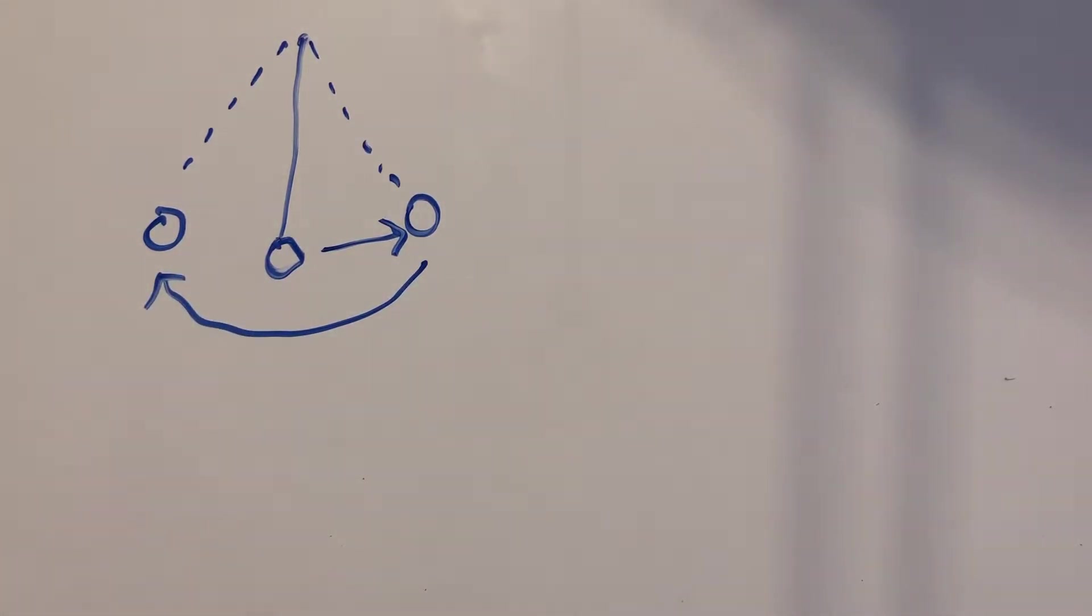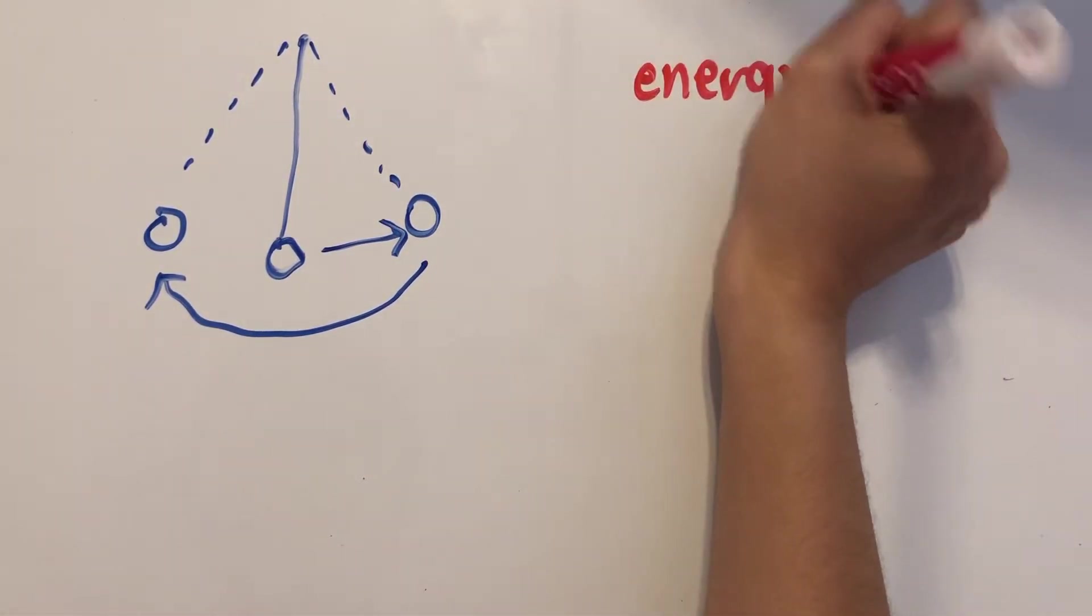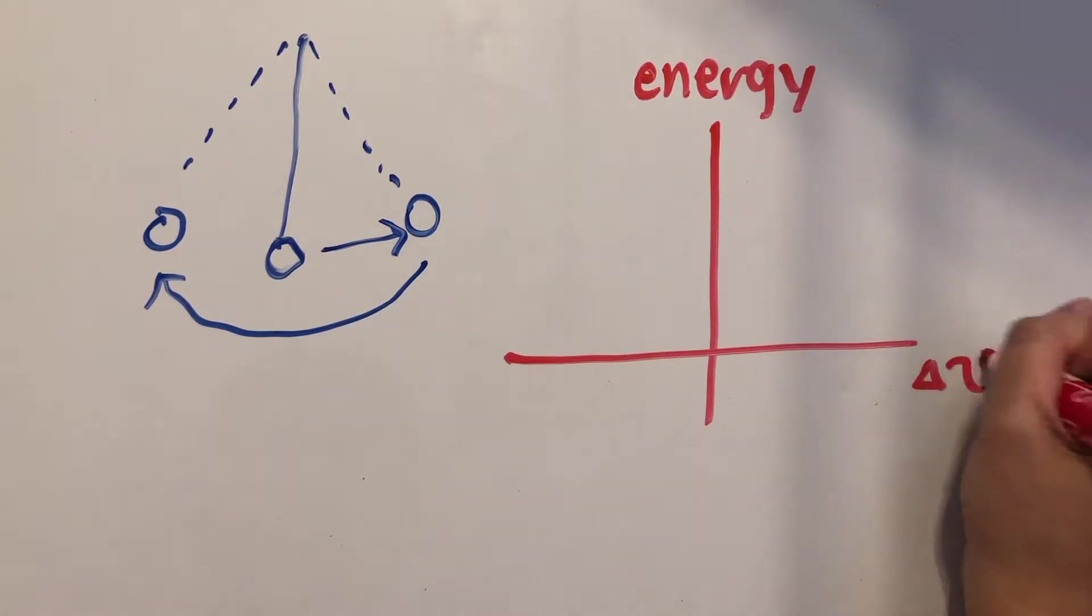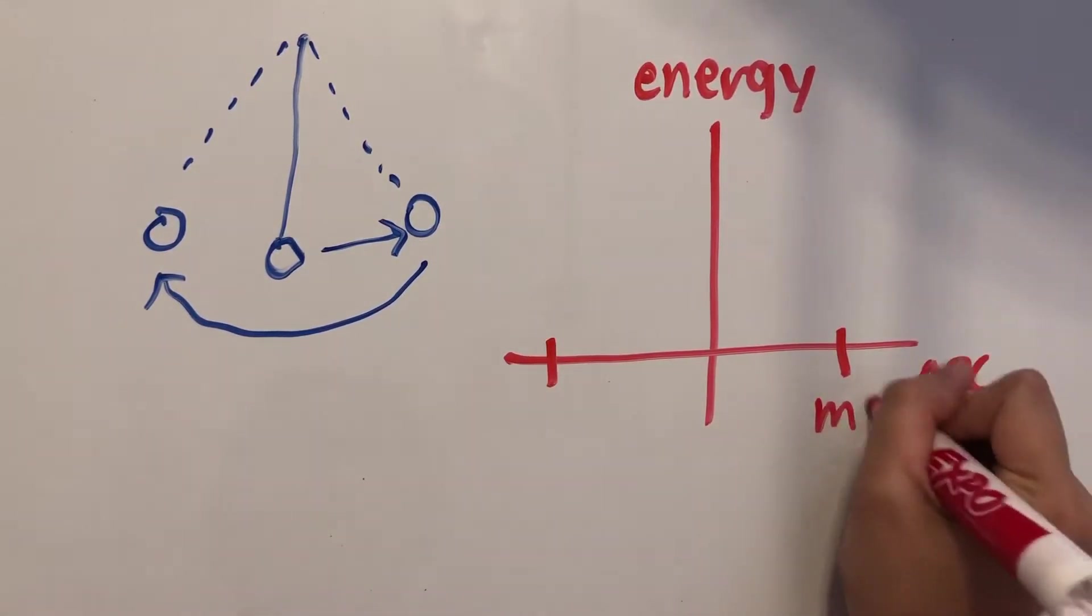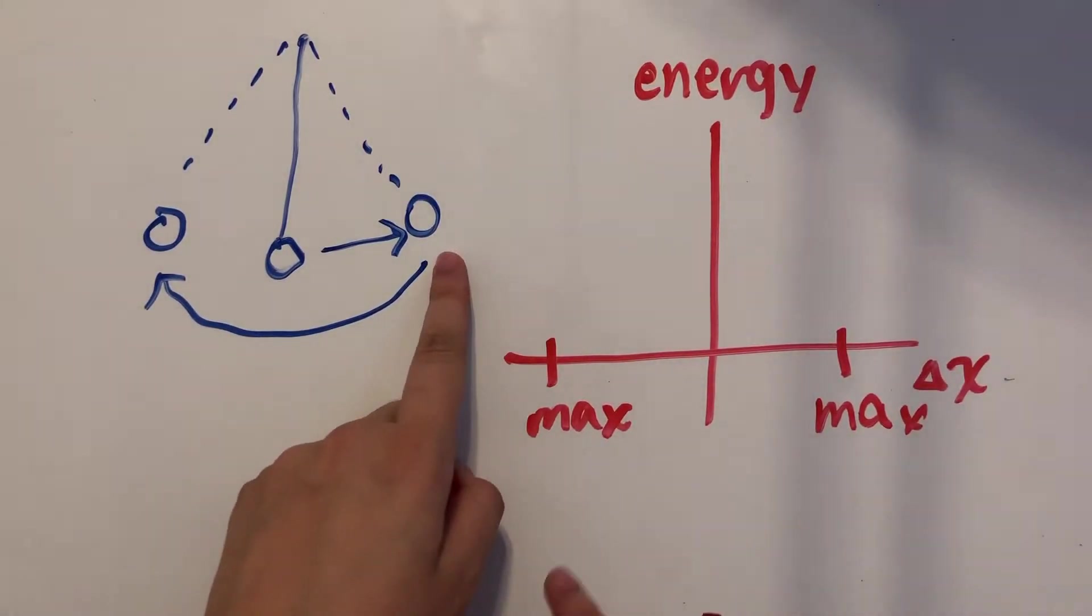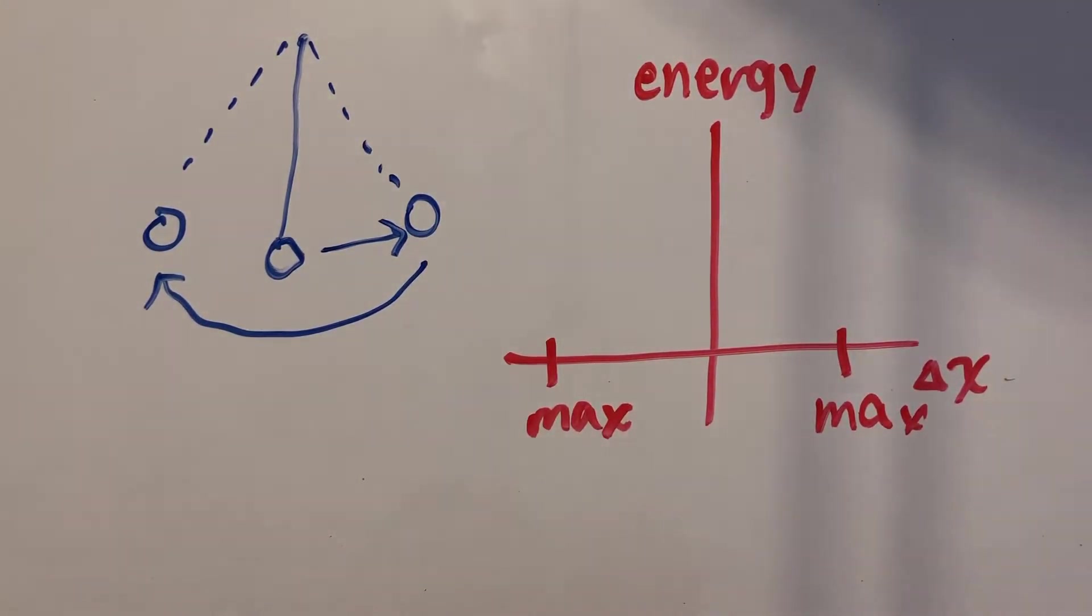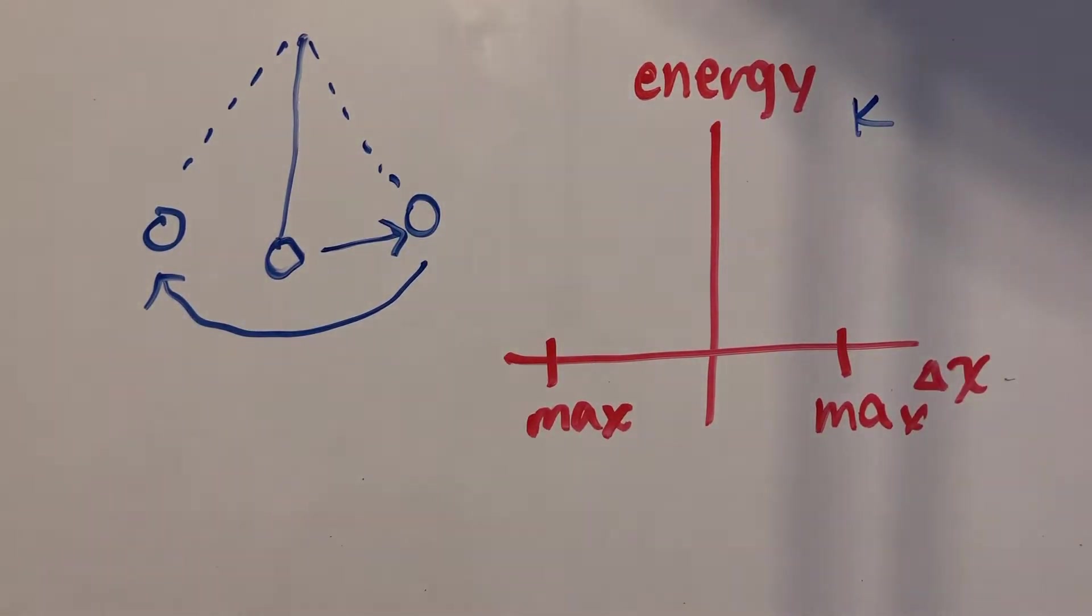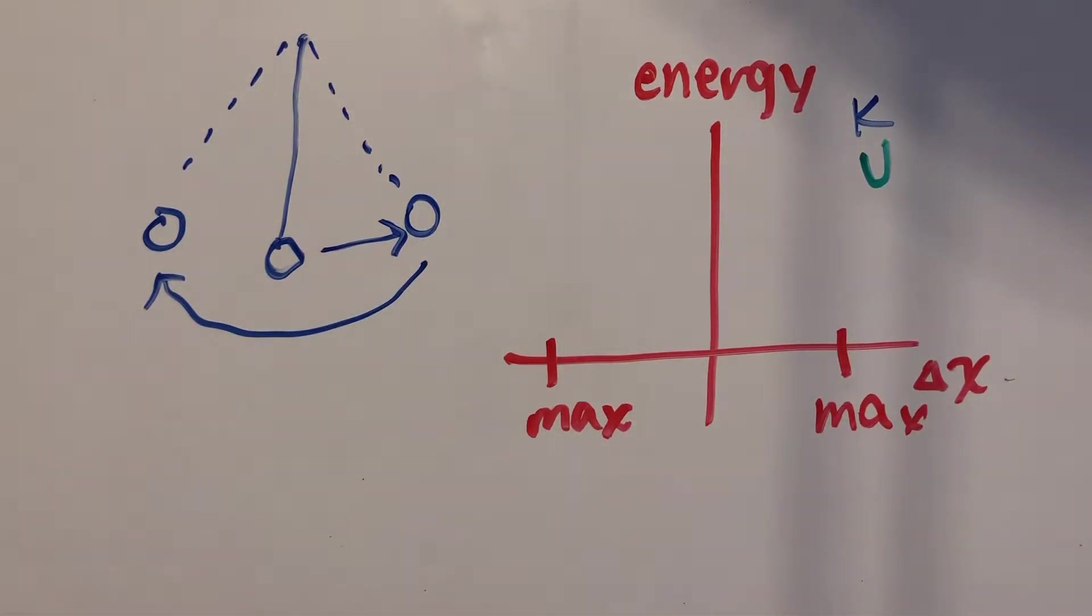So if we construct an energy versus displacement graph, it would look something like this. The energy can be plotted on the y-axis and our displacement would be on the x-axis. So these two points can be the maximum displacement positions. This point would correlate with this position of the pendulum and this point would correlate with this position. Let's assign colors to the kinetic and potential energies. So our blue line will be the kinetic energy line and our green line will be our potential energy line.